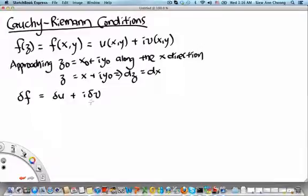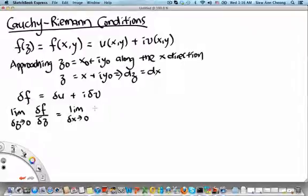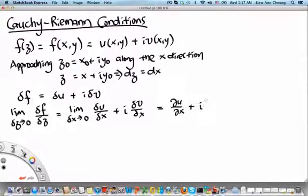So if we take the limit as delta z goes to 0 of delta f over delta z, this will be the same as taking the limit of delta x going to 0 of delta u over delta x plus i delta v over delta x. So in the limit, if the derivative of f exists, it should be equal to ∂u/∂x + i∂v/∂x.